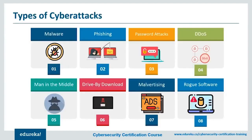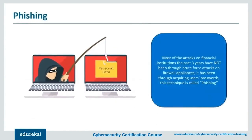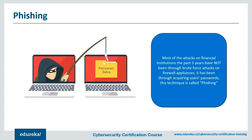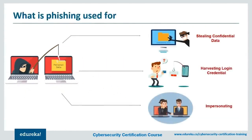Next on our list is phishing. Often posing as a request for data from a trusted third party, phishing attacks are sent via email and ask users to click on a link and enter their personal data. Phishing emails have gotten much more sophisticated in recent years, making it difficult to discern a legitimate request from a false one. Phishing emails often fall into the same category as spam, but are far more harmful than just a simple ad.